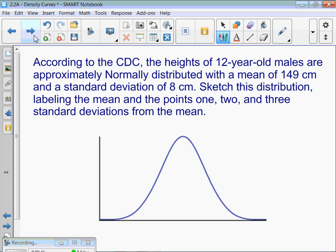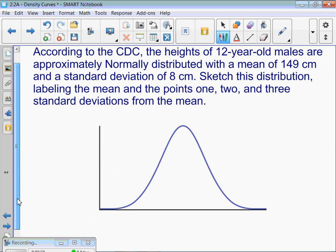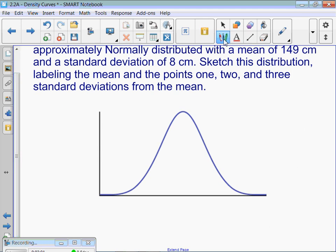So, you guys, draw a curve. You've got your x-axis and then draw a curve. Make it as symmetric as possible. And if it's symmetric, the mean and the median are exactly in the middle of the curve. So, the mean right here is 149 centimeters.